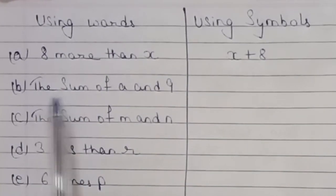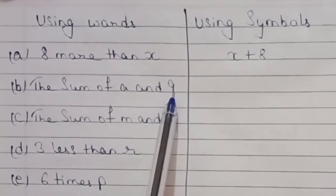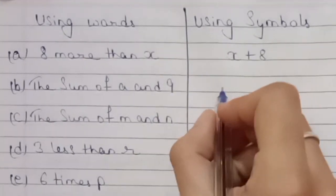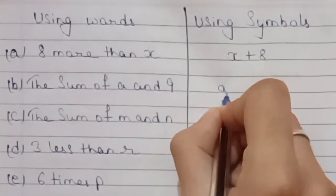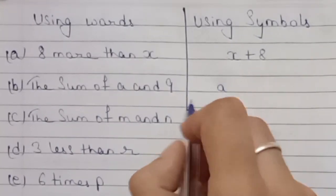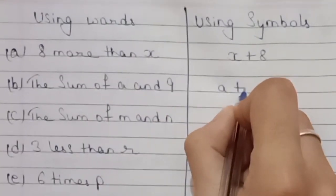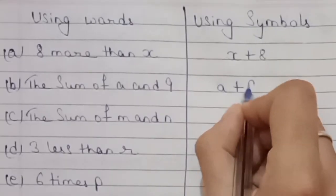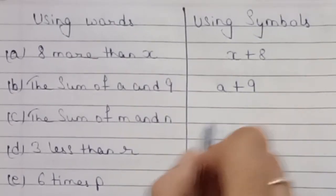B: The sum of a and 9. On the left side we have given the sum of a and 9. Sum means add, and add is represented by the plus symbol. So first a, then plus 9. The answer is a plus 9.